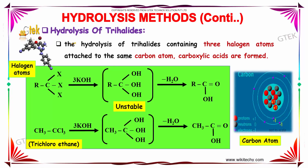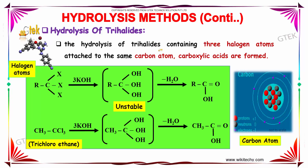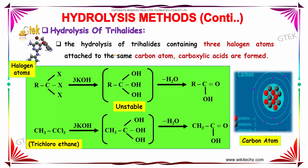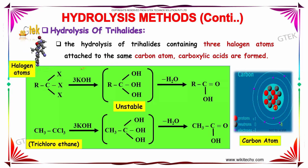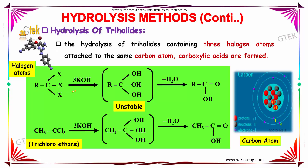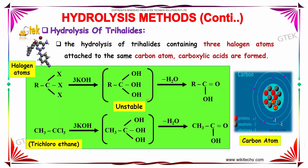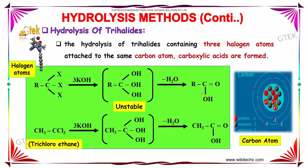Now let us study about the hydrolysis of trihalides. The hydrolysis of trihalides, which contain three halogen atoms attached to the same carbon atom, gives carboxylic acids. For example, RCX3 on addition of three moles of potassium hydroxide forms an unstable compound, which on further hydrolysis yields a carboxylic acid.